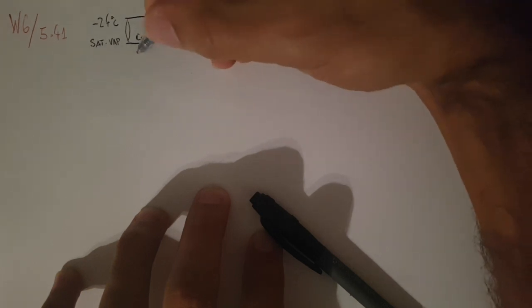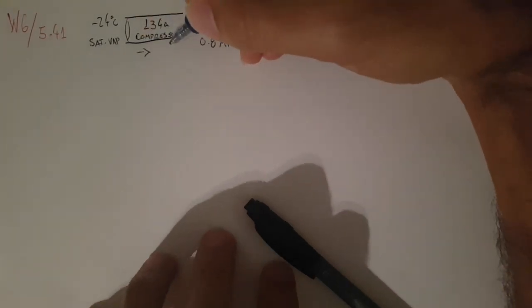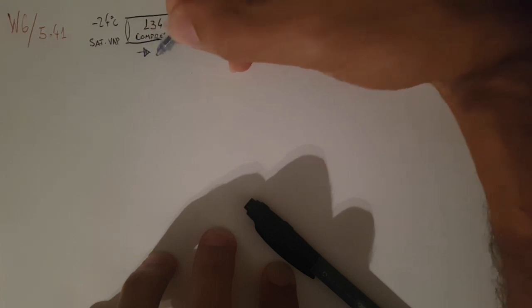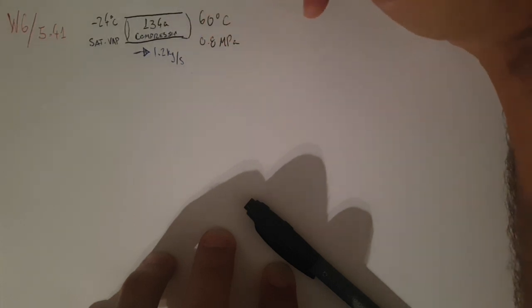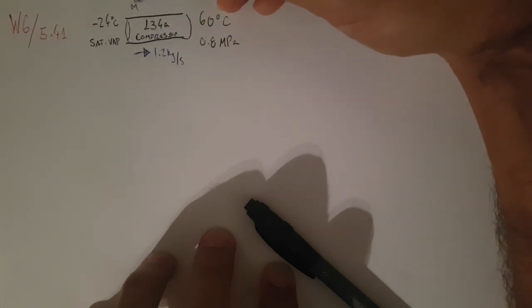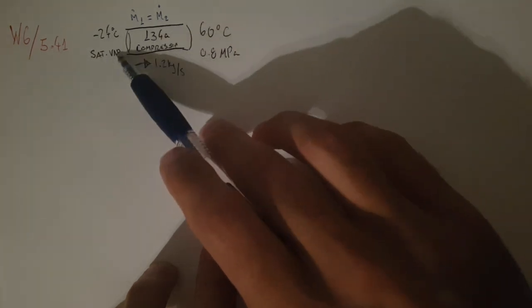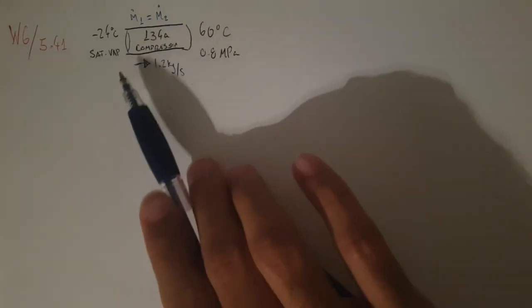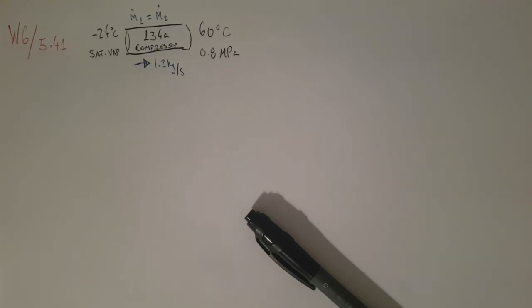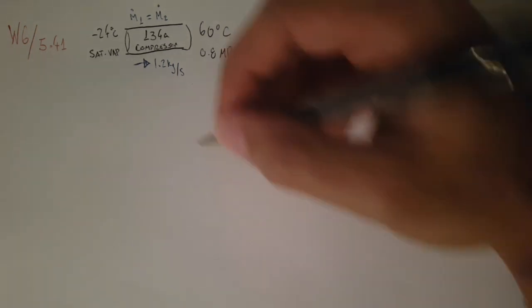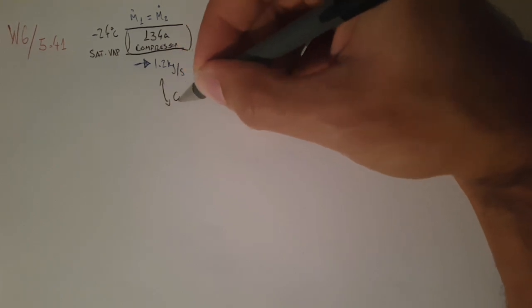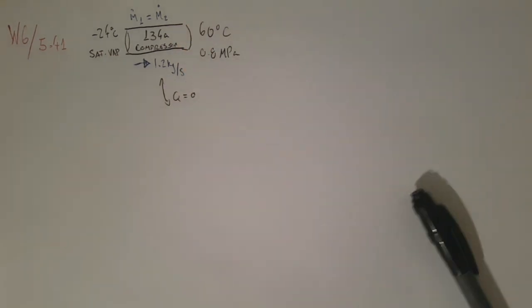Note that both states are defined from the beginning. We have a mass flow rate of 1.2 kilograms per second. Because of mass conservation, mass flow rate at inlet equals mass flow rate at outlet. All the R-134a that goes into the system eventually leaves, it doesn't stay in the compressor. It's an adiabatic system, so there's no heat going in or out.